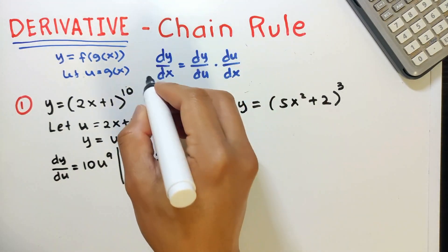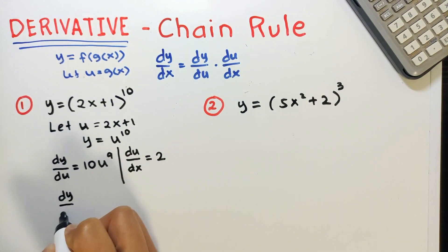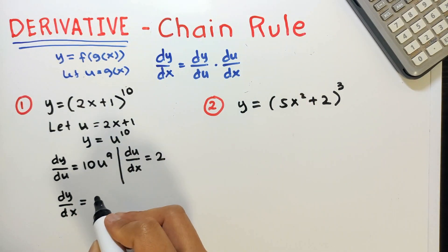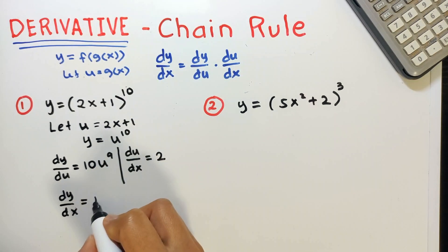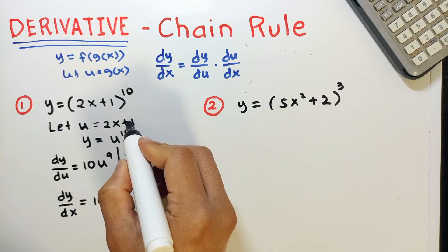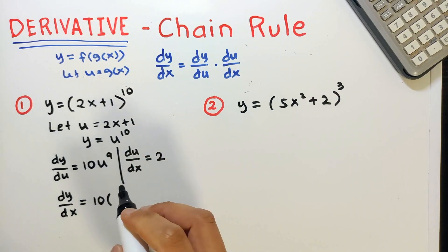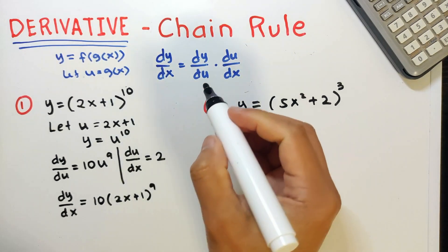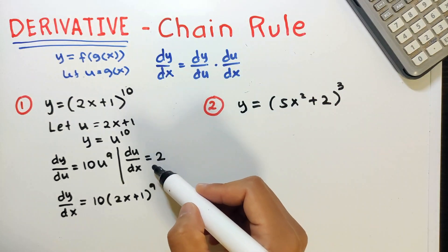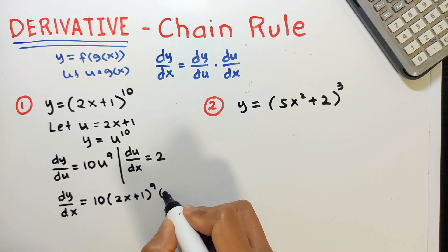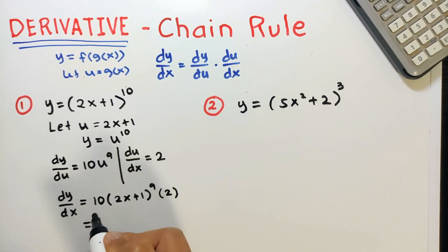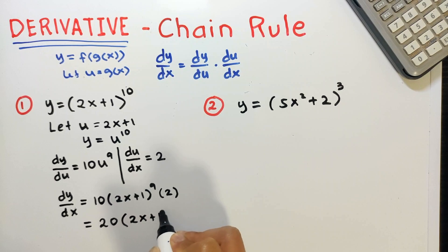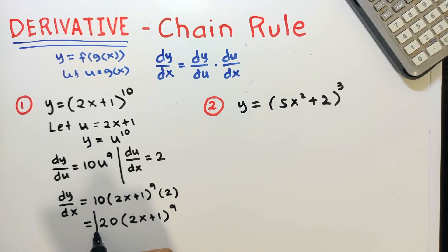Now let's follow the formula for finding the derivative of y with respect to x. This is equal to dy over du, which is 10u raised to 9, but u is equal to 2x plus 1, so we substitute 2x plus 1 as the base, giving us 2x plus 1 raised to 9. Then multiply by du over dx, which is 2. So we have 10 times 2 equals 20, giving us the final answer: 20 times 2x plus 1 raised to 9.